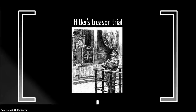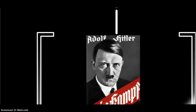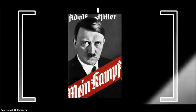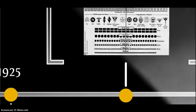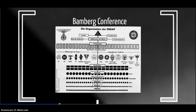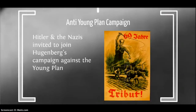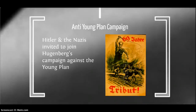In 1923 came the Beer Hall Putsch in Munich. In 1924, the Treason Trial of Hitler. In 1925, the publication of Mein Kampf, Hitler's book, which proved quite a hit within Germany. In 1926 was the Bamberg Conference, when Hitler reasserted his control and reorganised the party. And in 1929, the Anti-Young Campaign, when Hitler and the Nazis joined Alfred Hugenberg's campaign against the Young Plan, resulting in considerable exposure for the Nazis.